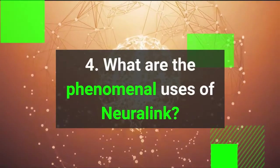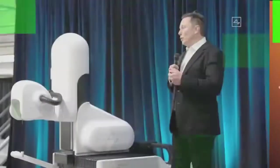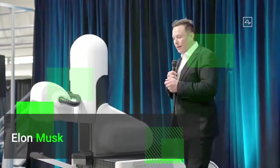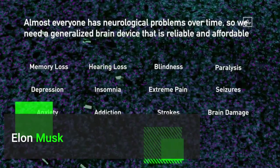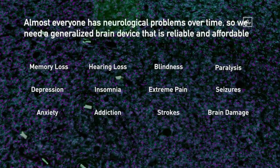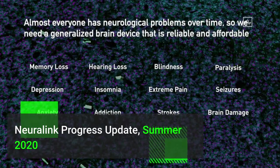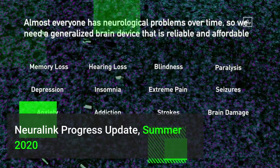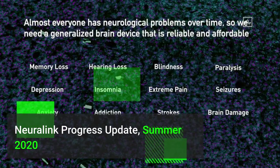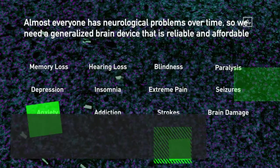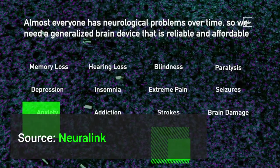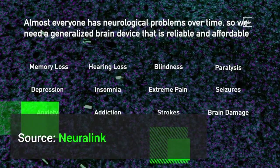What are the phenomenal uses associated to Neuralink? All of your senses, your sight, hearing, feeling, pain, these are all electrical signals sent by neurons to your brain. And if you can correct these signals, you can solve everything from memory loss, hearing loss, blindness, paralysis, depression, insomnia, extreme pain, seizures, anxiety, addiction, strokes, brain damage.